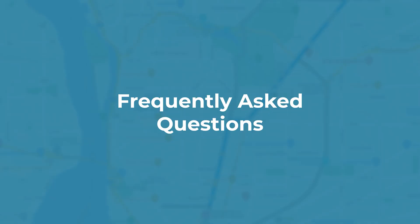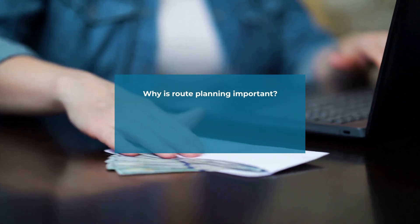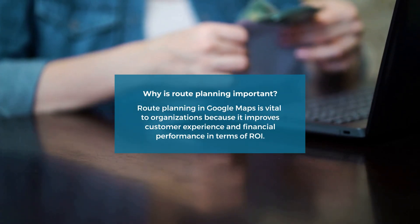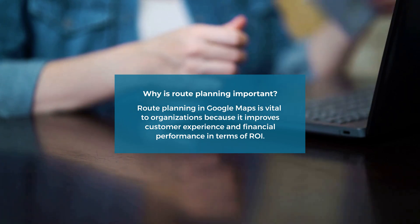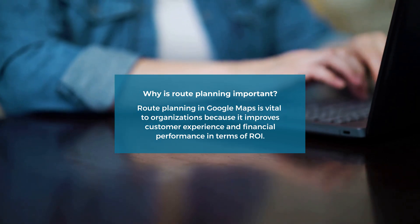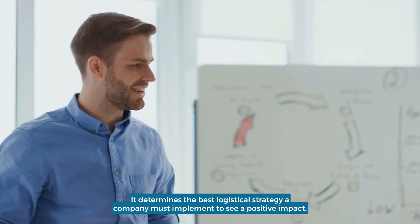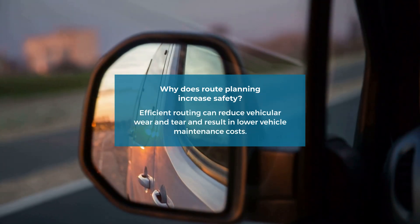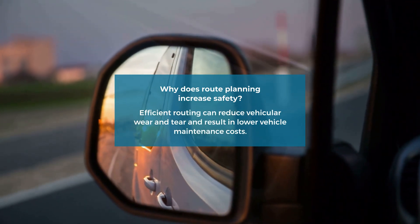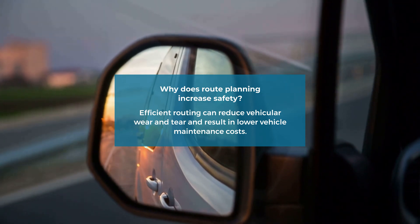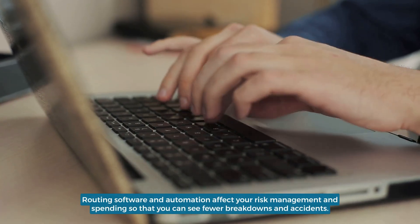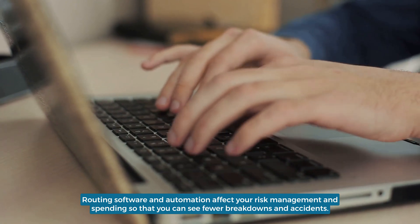Frequently asked questions: why is route planning important? Route planning in Google Maps is vital to organizations because it improves customer experience and financial performance in terms of ROI. It determines the best logistical strategy a company must implement to see a positive impact. Why does route planning increase safety? Efficient routing can reduce vehicular wear and tear and result in lower vehicle maintenance costs. Routing software and automation affect your risk management and spending so that you can see fewer breakdowns and accidents.